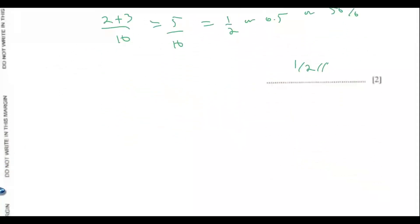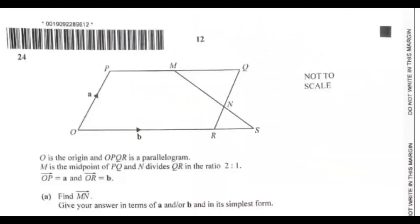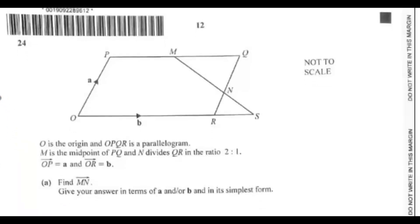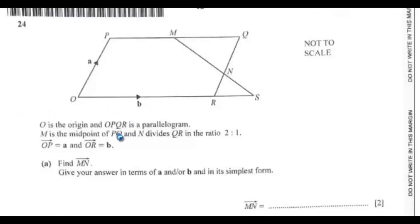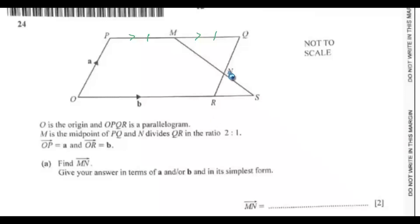Question 24 — the last question. O is the origin and O, P, Q, R is a parallelogram. M is the midpoint of PQ, so PM and MQ are equal. N divides QR in the ratio 2:1. Since OP is parallel to RQ, and OR = B, then PQ = B as well, so PM = MQ = (1/2)B. Also RQ = A, so QN = (2/3)A and RN = (1/3)A.